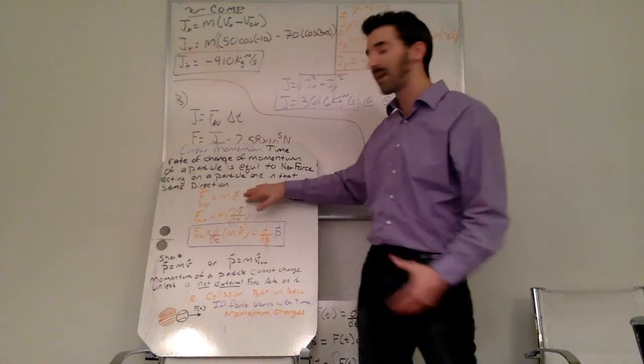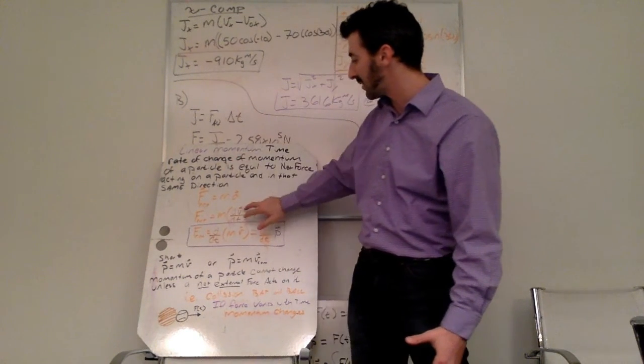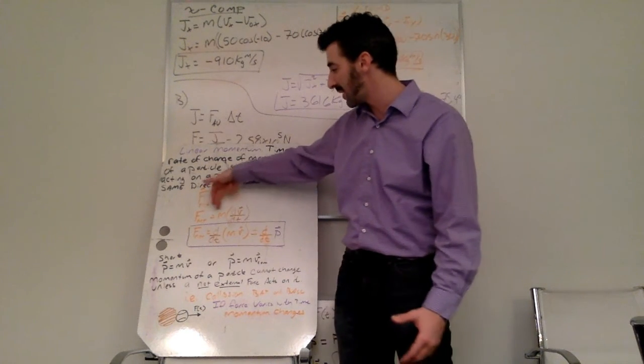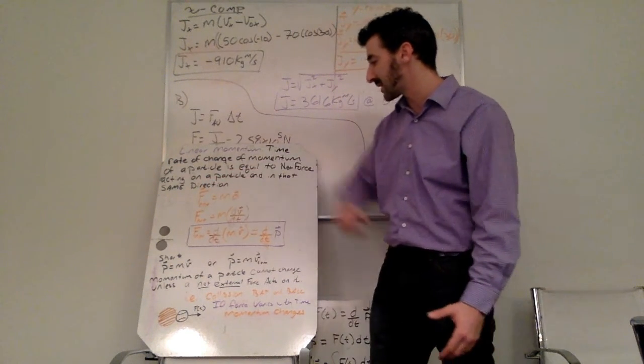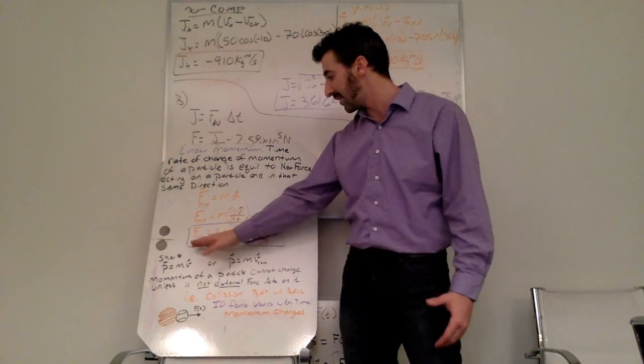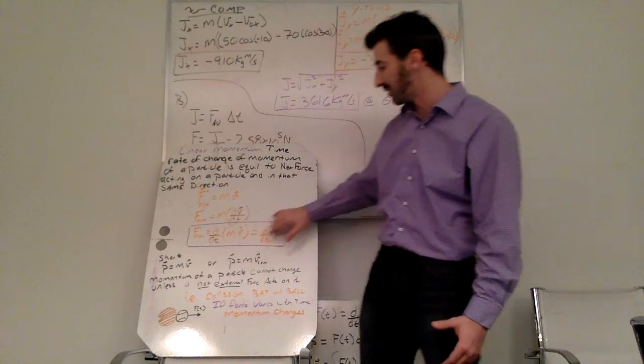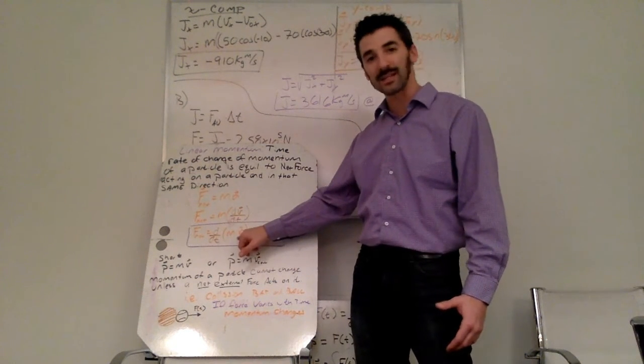So starting with F_net equals ma, if I know acceleration by definition is a time rate of change of velocity, so I have mass times my change of velocity per unit time. Then with some simple rearranging I have the net force as a change per unit time, here's my derivative function, of a mass times velocity.